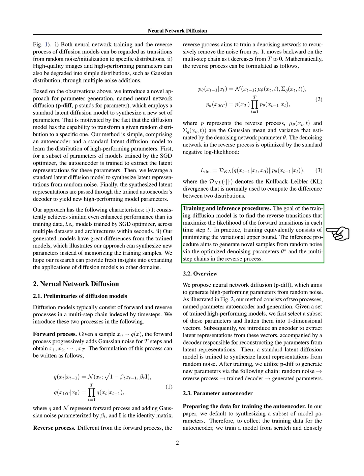This process involves selecting a subset of parameters from trained high-performing models, flattening them into one-dimensional vectors, and then using an encoder to extract latent representations from these vectors. A decoder is then used to reconstruct the parameters from the latent representations.